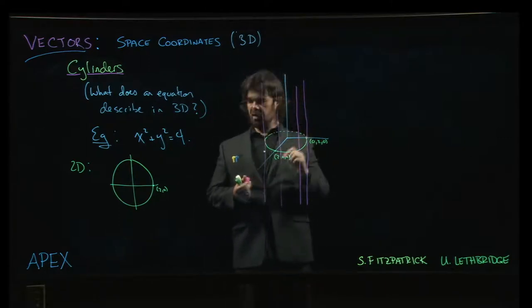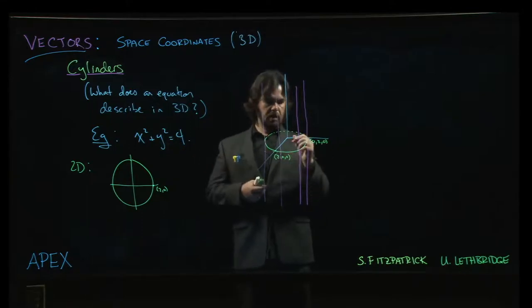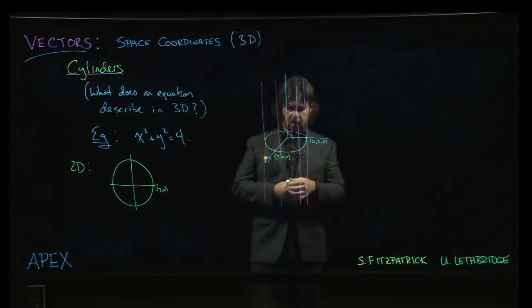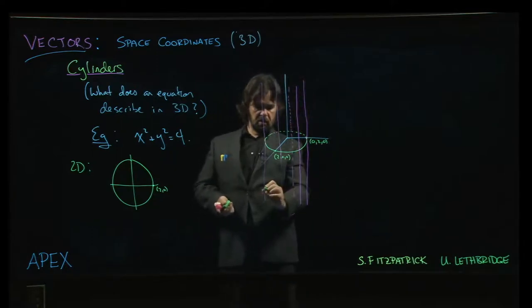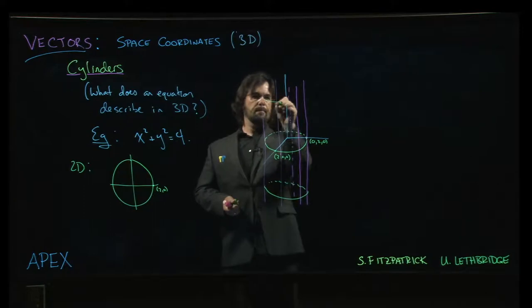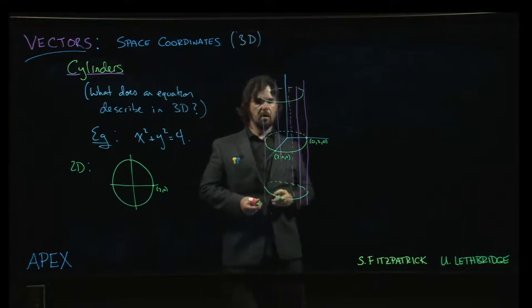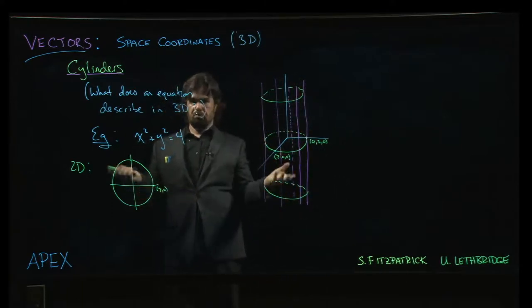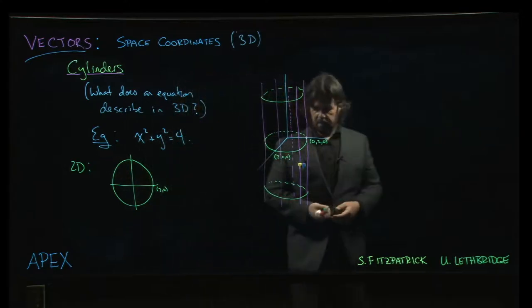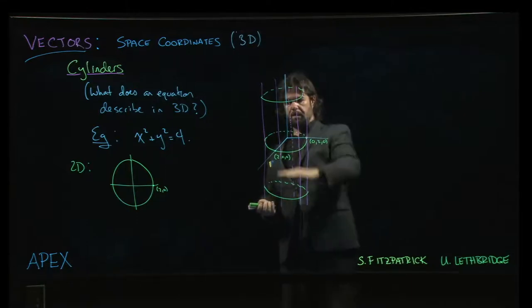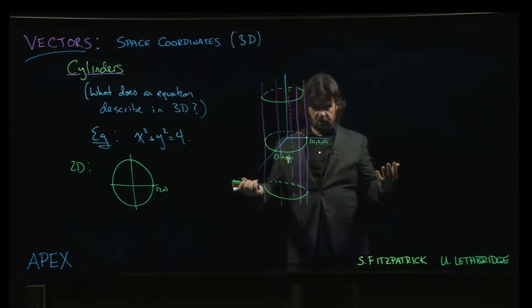And so in fact what we get in three dimensions from a single equation like this is not a curve but a surface. Take a point on the back, extend that up and down as well. We can pick any other z-coordinate we want and we would have a corresponding circle, say down there or up here. And so you can see where the name cylinder would come from because you have this cylindrical shape, like a Pringles tube or something like that. We can think of taking that circle and you just slide it up and down, slide it along these vertical lines and you generate the surface.